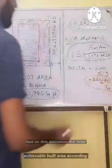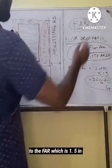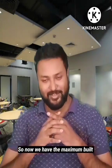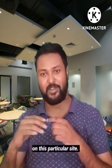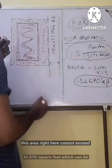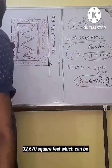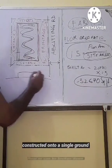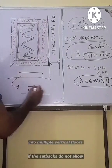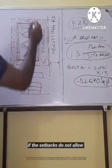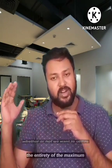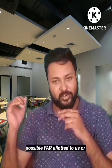So this becomes the total achievable built area according to the FAR of 1.5 for this site. So now we have the maximum built area which can be constructed on this particular site. This area cannot exceed 32,670 square feet, which can be constructed on a single ground floor or broken down into multiple vertical floors if the setbacks do not allow construction on a single floor. However, it's up to us to decide whether or not we want to utilize the entirety of the maximum possible FAR allotted to us.